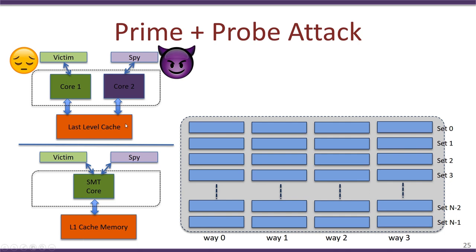Cache memories can be abstractly represented with rows corresponding to each set. For example, we have n cache sets from set 0 to set n, and each set has four ways — way 0 to way 3. Depending on the address accessed by the victim or spy process, one particular cache line in a particular set is used to store their data.